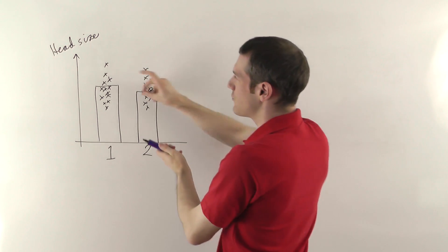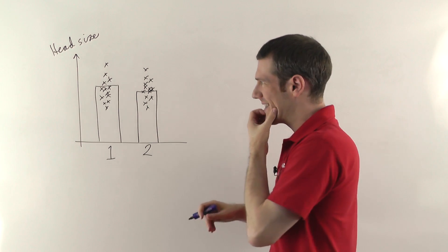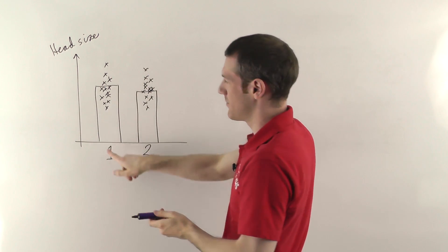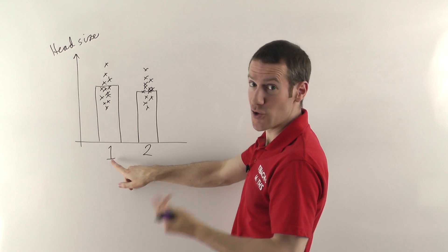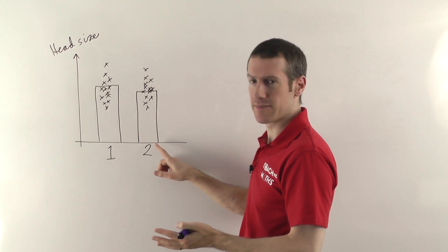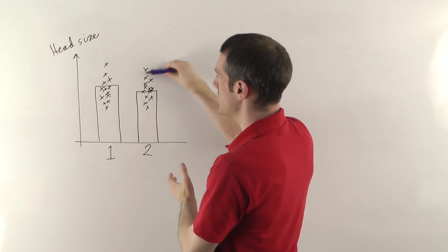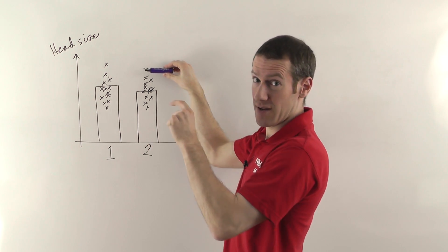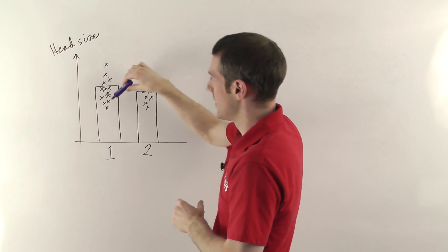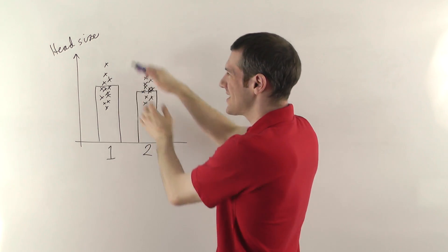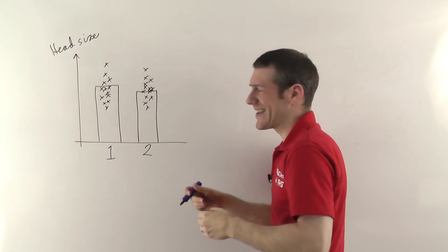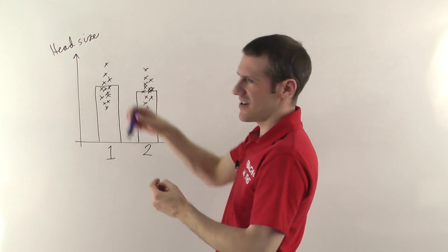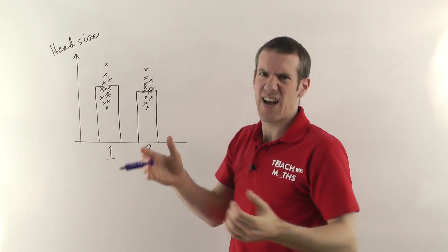But if they're very spread out like this, then who's to say that this new process was really better than the old one? Because quite a few of the points in the old process were actually higher — giving you a bigger head of beer — than in the new one. Because they're so spread out, it's hard to know: has this really made a difference, or was I just lucky with some of these and ended up getting a really big head of beer?